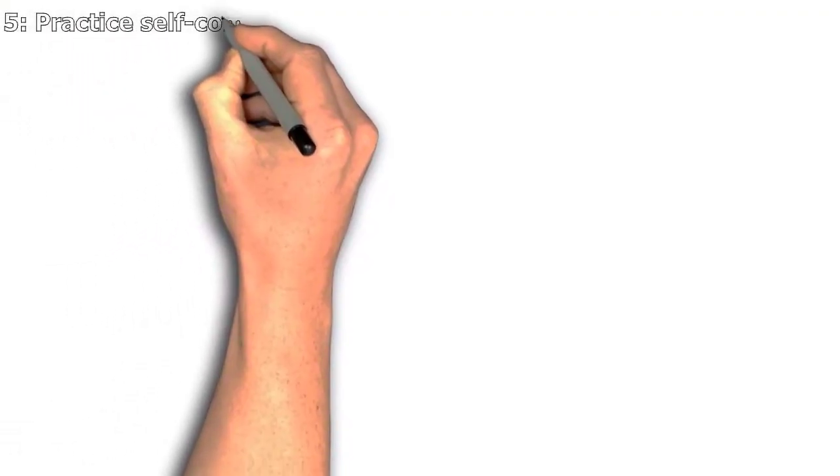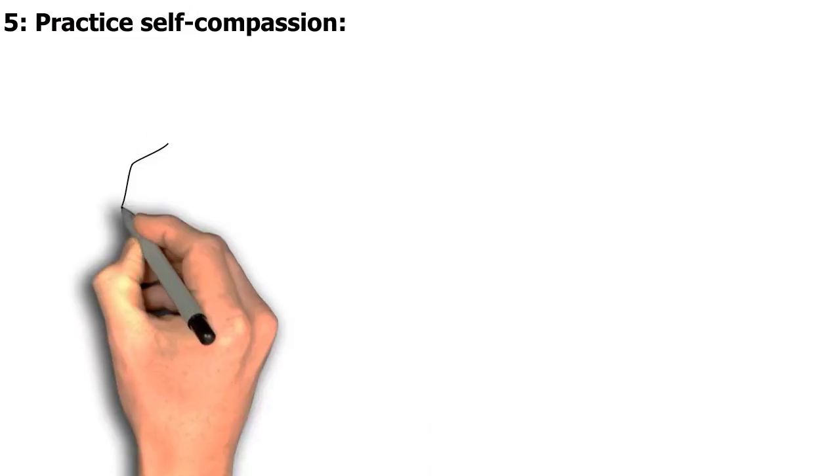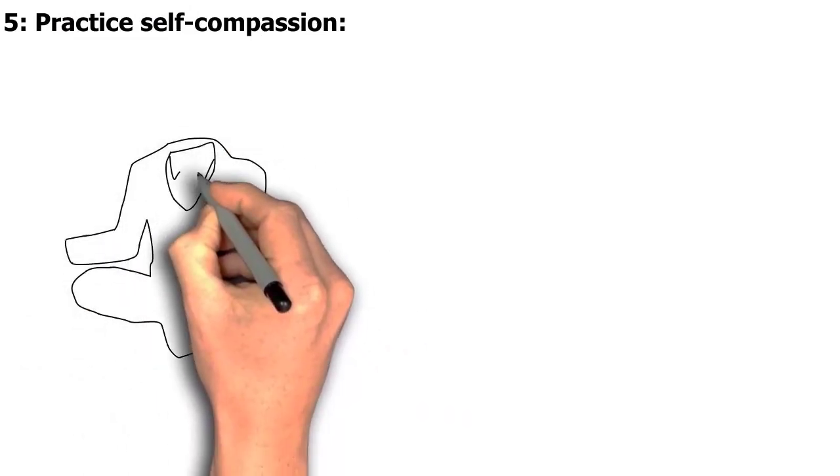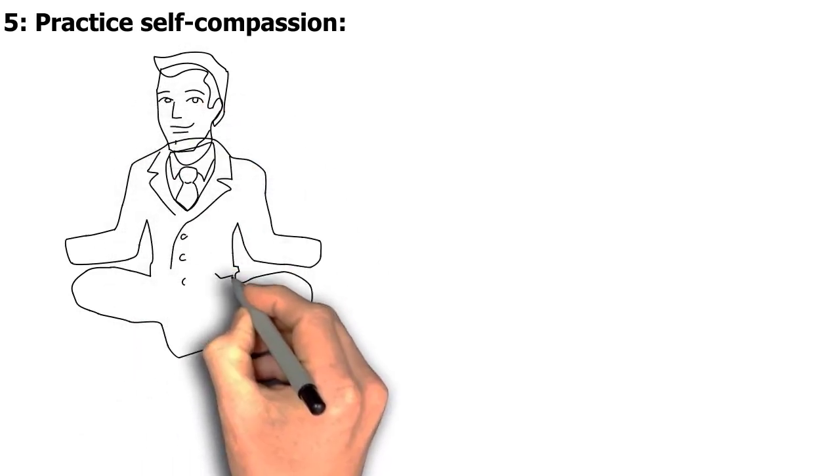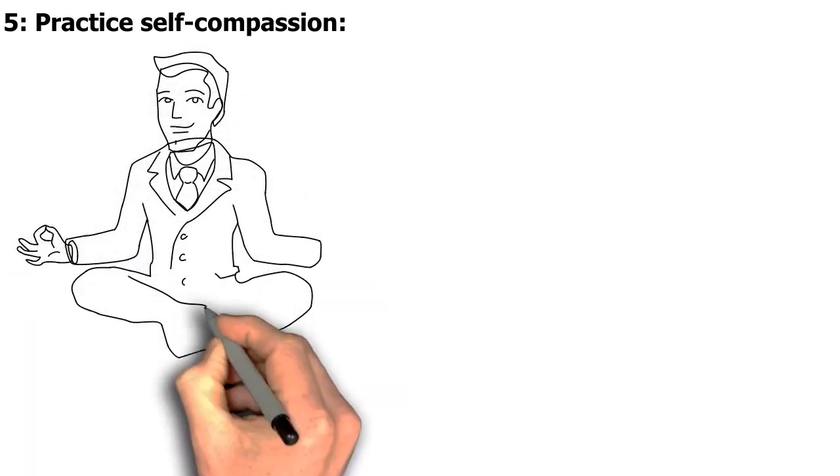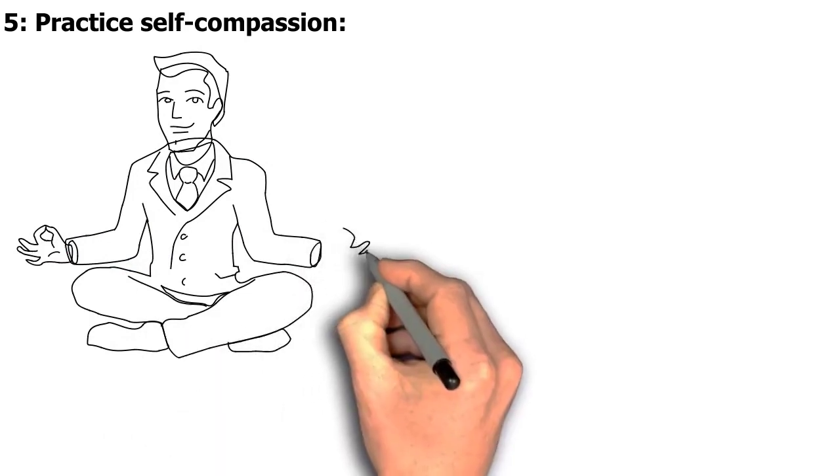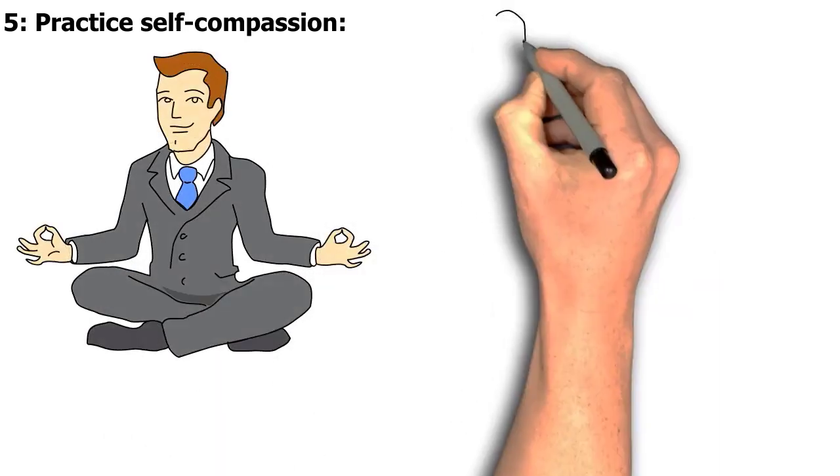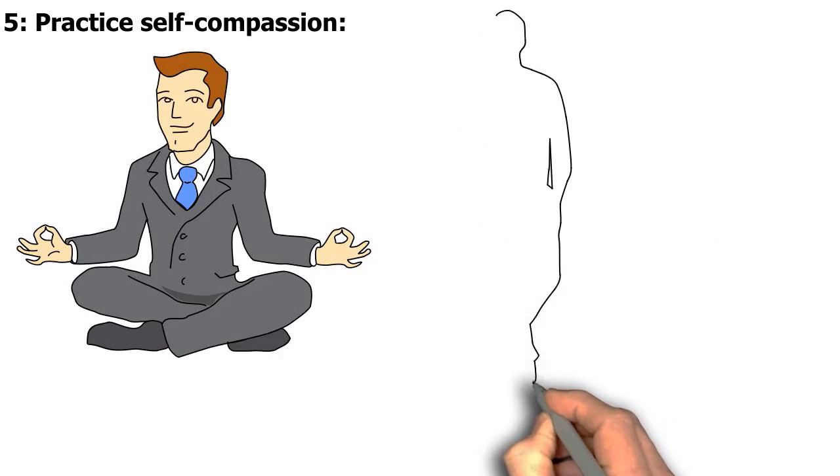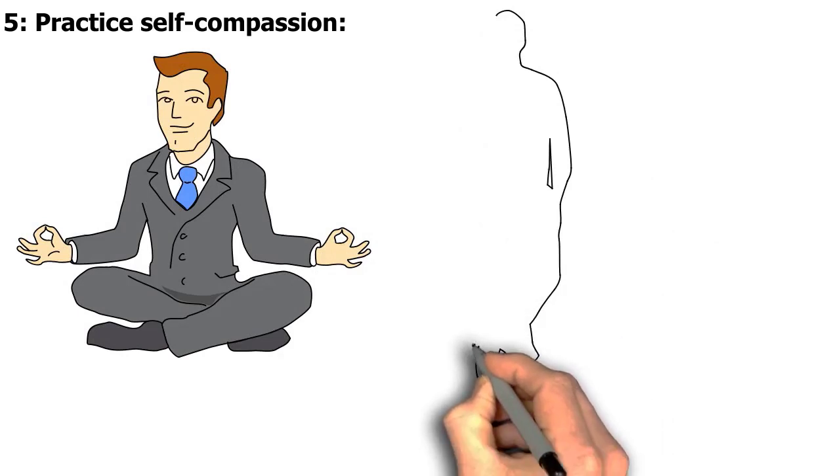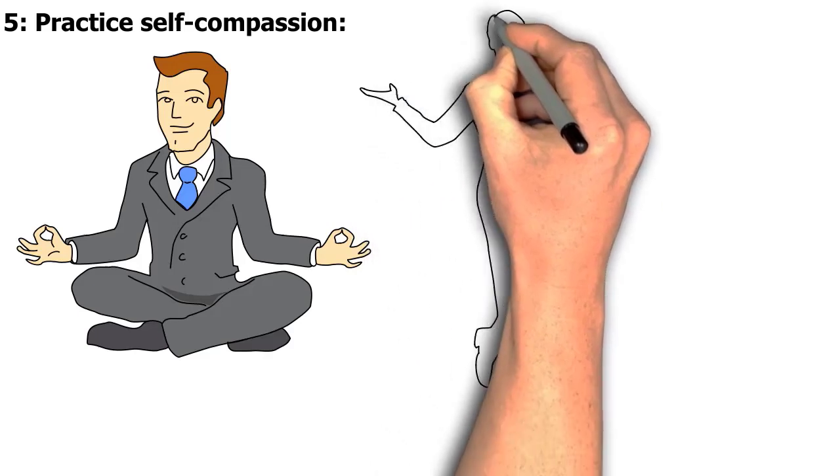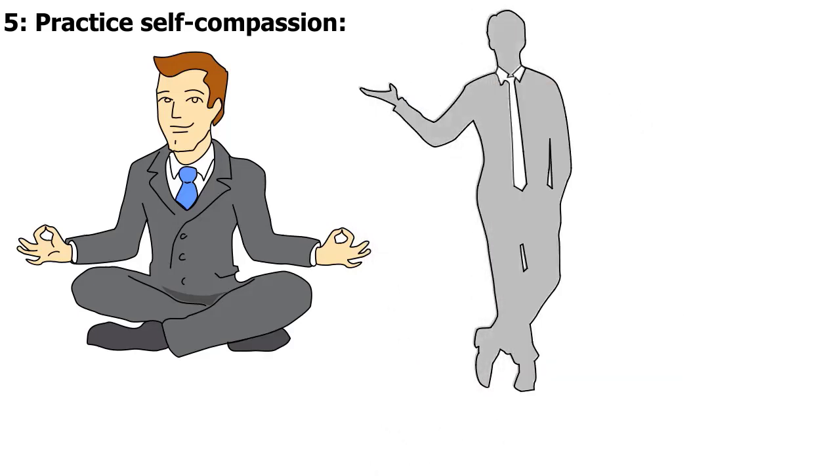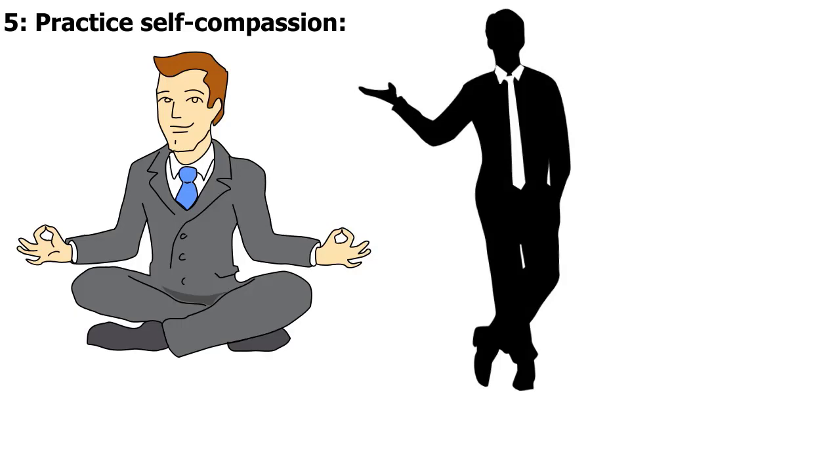5. Practice self-compassion. Being kind and understanding towards yourself, especially in times of stress or failure, is an important part of building self-esteem. Recognize that everyone makes mistakes and has challenges, and offer yourself the same kindness and understanding that you would offer to a good friend. This can help you to be more resilient and better able to bounce back from setbacks. Self-compassion can also help you to be more accepting of your flaws and imperfections, rather than judging yourself harshly for them.